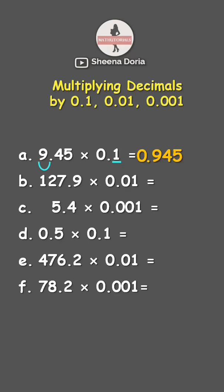Next, for 127.9 times 0.01, here we have two decimal places. So it means we will move the decimal point two times to the left — that's one, two. Now our answer is 1.279.